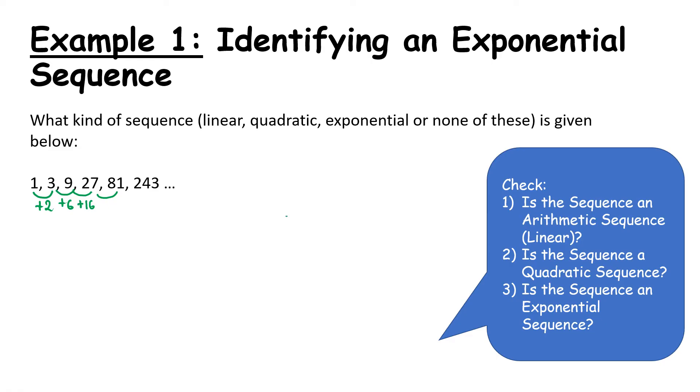54 plus 162. Okay, it's definitely not linear.